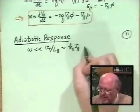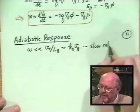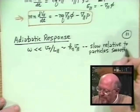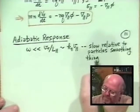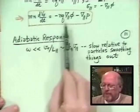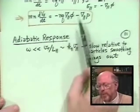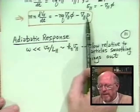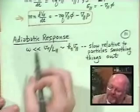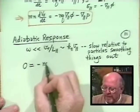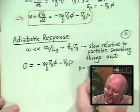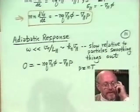This is the 'slow' limit relative to particles smoothing things out. Looking at our momentum balance equation, the only d/dt term is dropped in this slow limit. If we convert grad_parallel P into temperature times density times grad n, the ordering works out, and the momentum balance simply becomes: 0 equals NQ grad_parallel phi minus grad_parallel P.